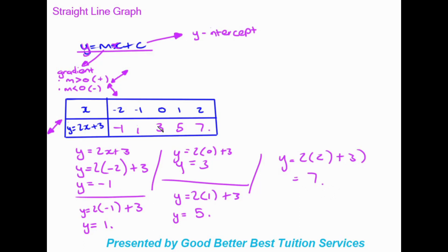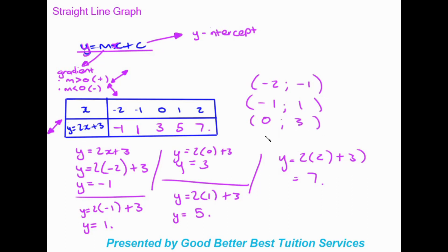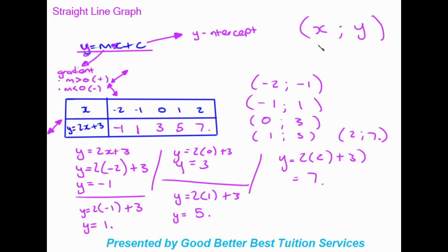Just like that we found our plotting points. Write them out as coordinate pairs — x value first and y value second. So our pairs are: negative 2 and negative 1; negative 1 and positive 1; 0 and 3; 1 and 5; 2 and 7. This is how coordinates are always written, with x on the left and y on the right, and these will help you plot your graph onto a Cartesian plane.